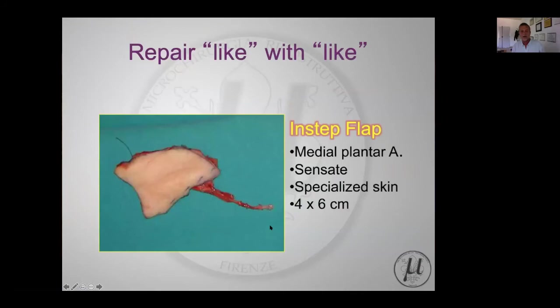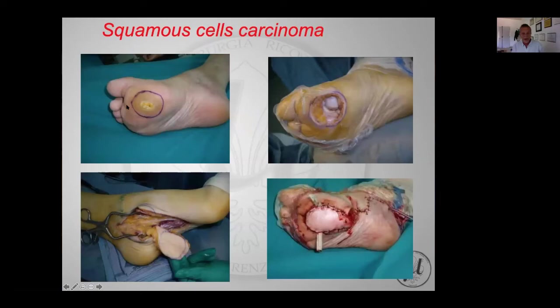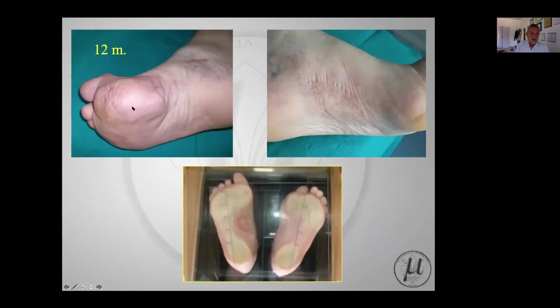Another reconstruction that can be done with perforator flaps is the instep flap or medial plantar flap, which is a relatively new option. The big advantage is that it can provide skin comparable to the palm of the hand and the sole of the foot, which is ideal for defects in those areas. This is an example of squamous carcinoma in a very difficult location where no local flaps can reach. Instead of using a conventional fasciocutaneous flap, we used a medial plantar flap from the contralateral foot - and the result is really good.